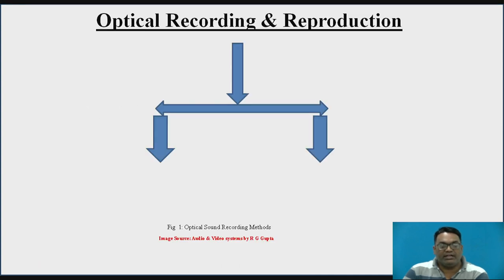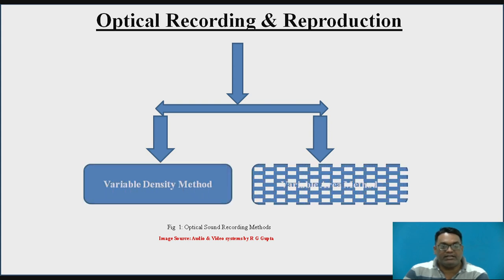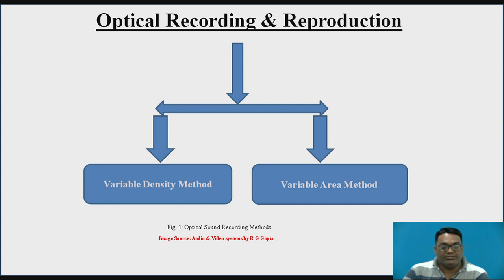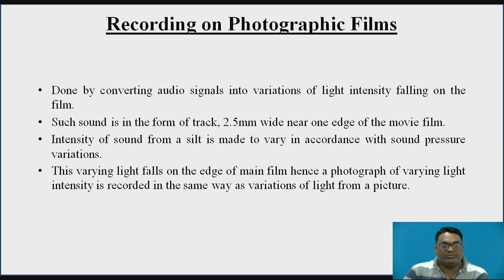Optical recording and reproduction of sound can take place in two different methods. The first one is the variable density method and the second one is the variable area method. The basic principle of recording on photographic film is done by converting audio signals into variations of light intensities falling on the film. The recorded sound is called a track, which has a width of 2.5 mm and is on the edge of the movie film.